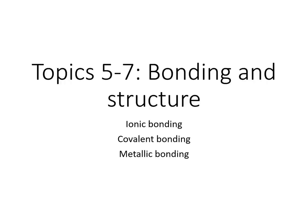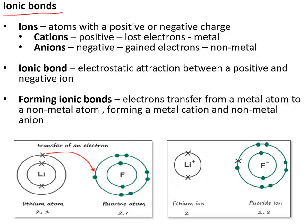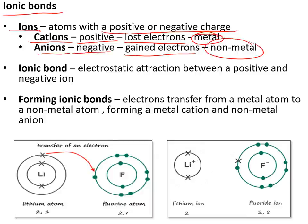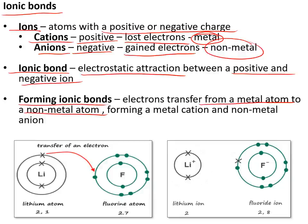Topics 5 to 7 on bonding and structure. Ionic bonds form when a positive ion is attracted to a negative ion. Ions are atoms with a positive or negative charge. Cations are positive ions formed by losing electrons, and it is metals that form those. Anions are negative ions formed by gaining electrons, done by non-metals. An ionic bond is the electrostatic attraction between a positive and a negative ion. To form ionic bonds, electrons are transferred from a metal atom to a non-metal atom — lithium loses its outer shell electron and gives it to fluorine, filling fluorine's outer shell, creating a negative fluorine ion and a positive lithium ion attracted to each other.